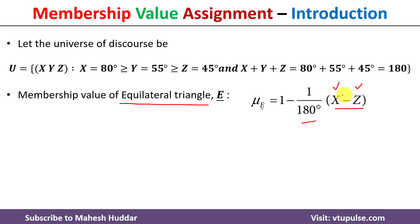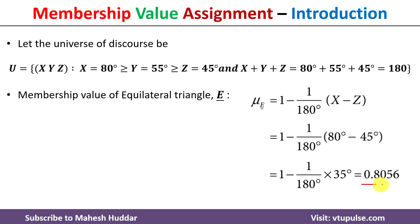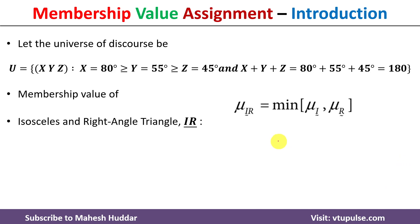So 80 minus 45 equals 35. Then 1 minus (35 divided by 180) equals 0.8056. This is the membership value of the equilateral triangle.